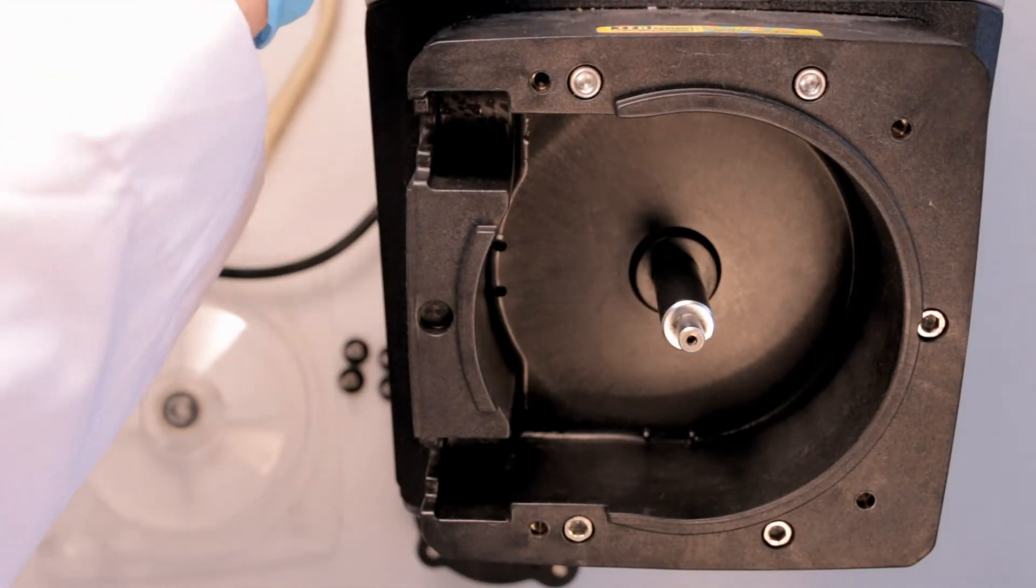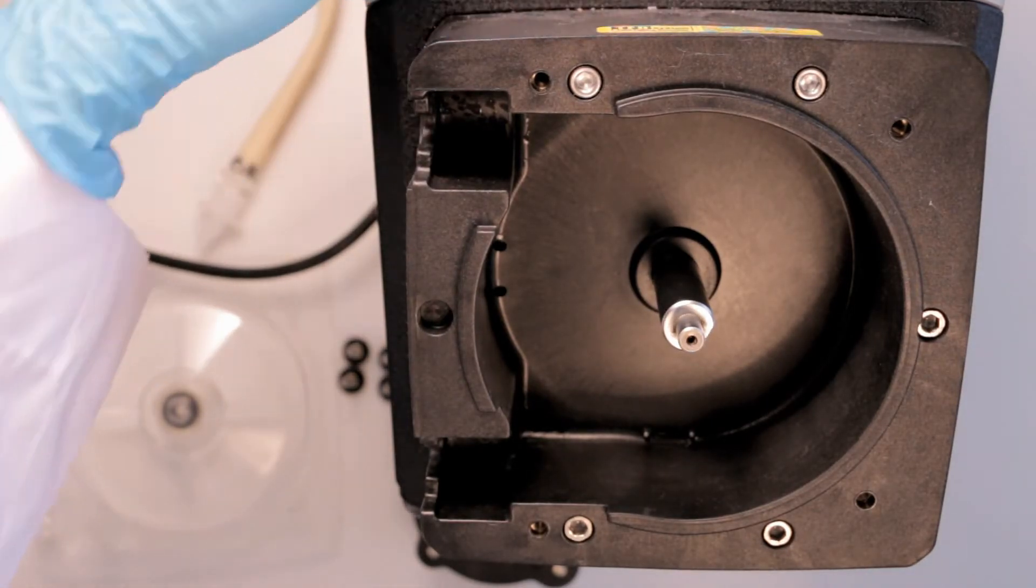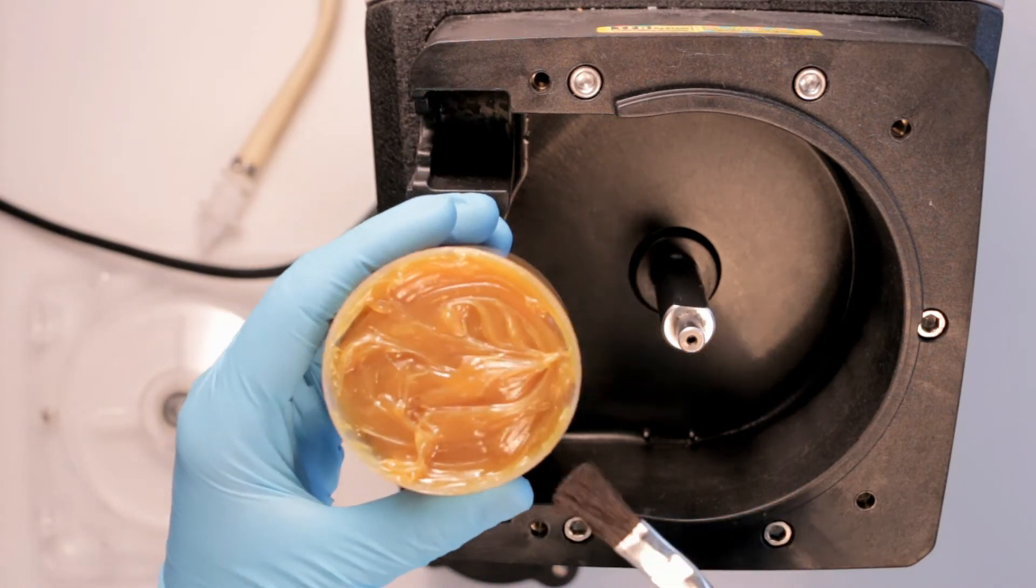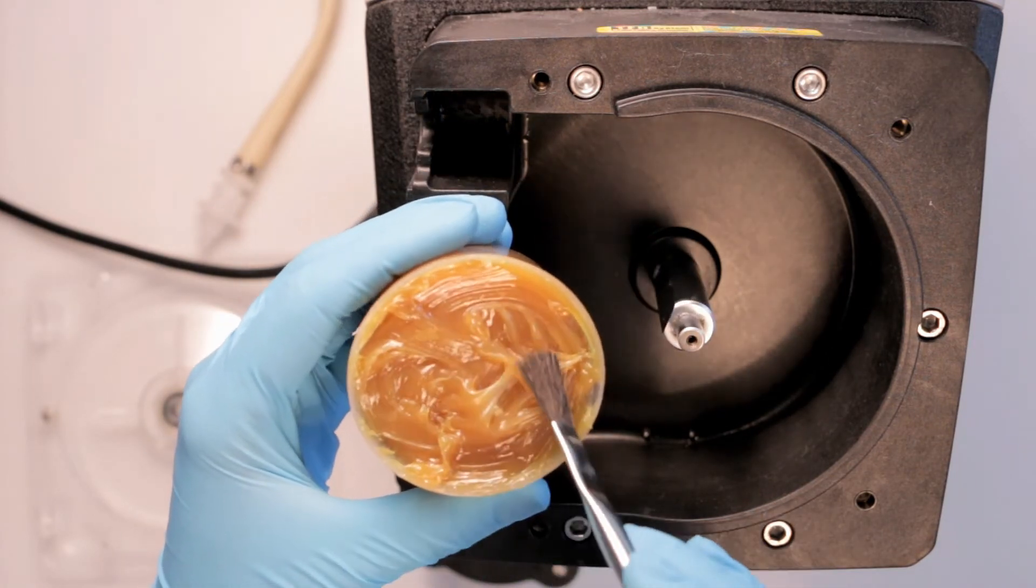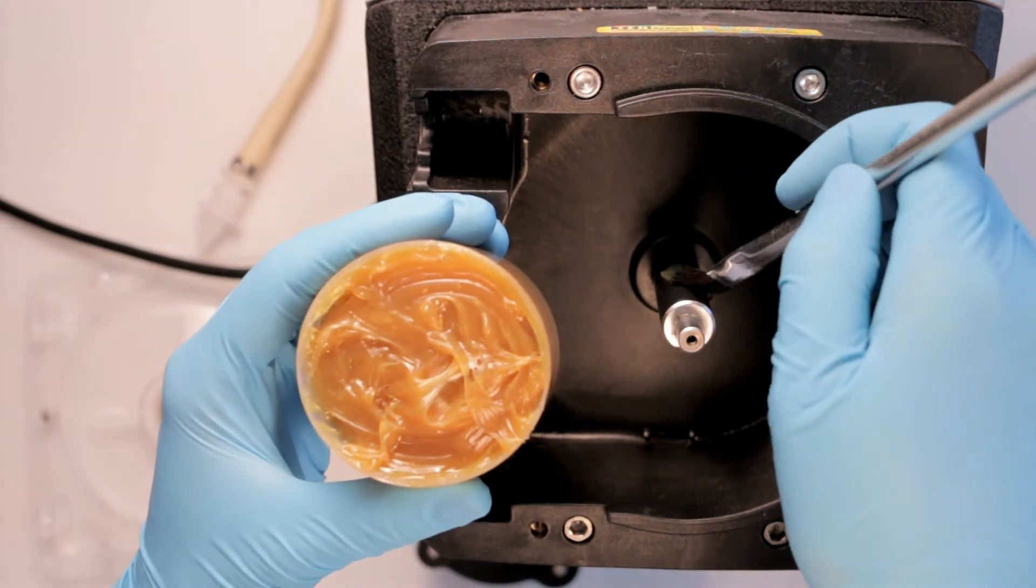In order to grease the motor shaft, press start to turn on the maintenance mode. This gets the shaft spinning at a low RPM. Take your high temp grease and paint it onto the motor shaft.